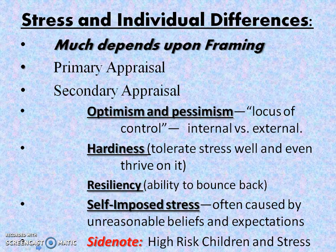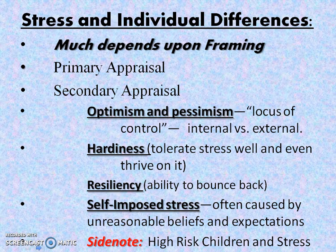One example was a research study done with 240 high-risk children in Hawaii who had experienced stress at birth, poverty, and family conflict, and were followed for 40 years. Two-thirds had become involved in crime or developed psychological problems, but one-third became confident, competent, caring adults. The resilient members tended to be affectionate and outgoing from birth, which attracted other people to them. They had interests and talents that helped them make friends, develop a sense of purpose, and gain self-esteem. Equally important, they had warm, supporting relationships with at least one adult other than their parents who viewed them as special.